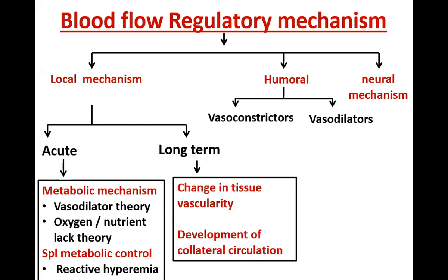If there is an obstruction resulting in lack of blood supply to a tissue or organ, the hyperemia — the increase in blood flow after the obstruction has been relieved — will be proportionately more compared to the duration for which the obstruction was present. That is called reactive hyperemia. In reaction to the loss of blood flow due to obstruction, the blood flow then increases many more times for the same amount of time as the obstruction, to combat the lack of oxygen, lack of nutrients, and accumulation of metabolic waste products.